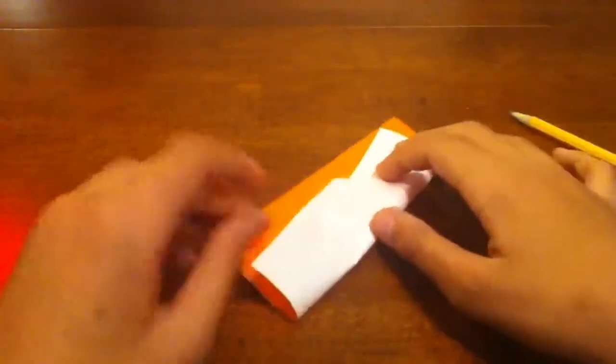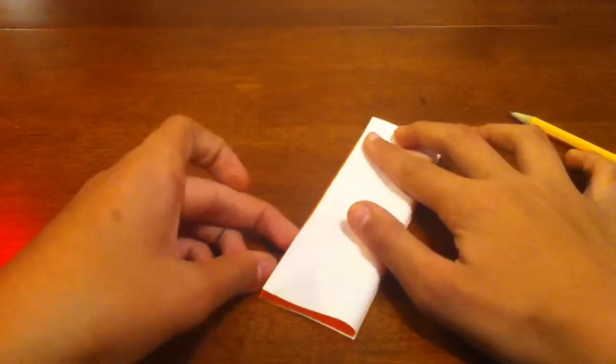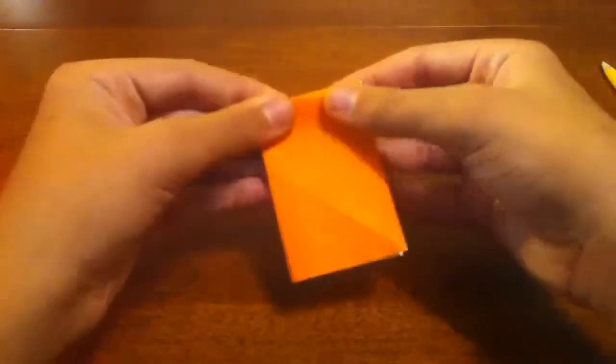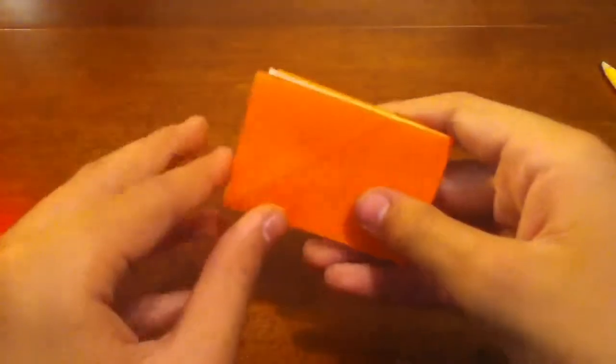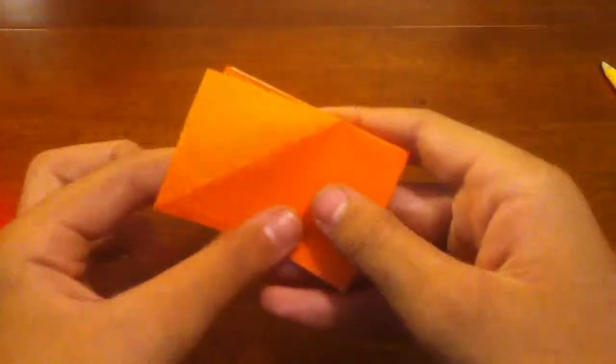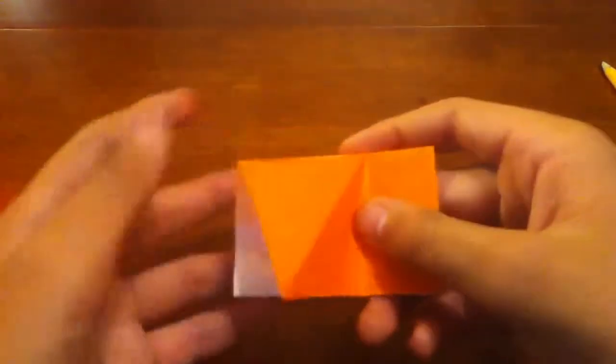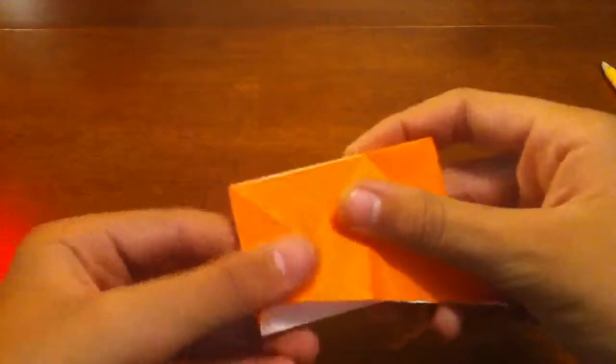Fold the model over. The whole thing in half. There's a partial diagonal crease, just fold it down along that line right there and then squash it.